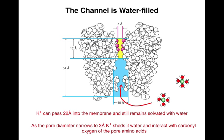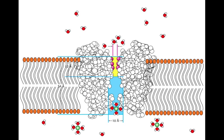Here's the potassium ion with its water shell entering the channel. It reaches the selectivity filter and it has to lose its water shell. Then it loses its water shell and makes favorable interactions with the selectivity filter.